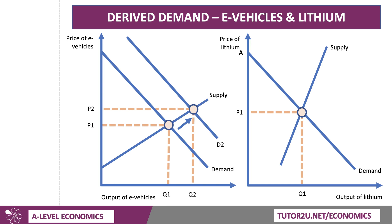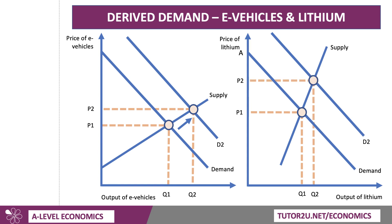That then causes an increase in the derived demand for lithium. So D goes out to D2 for lithium, the intermediate input. I've drawn the supply curve here as fairly inelastic, suggesting there may be some time delays or production capacity limits in terms of lithium's availability as a scarce resource. And if supply is price inelastic, then an increase in demand will lead to quite a sharp rise in the world price of lithium.